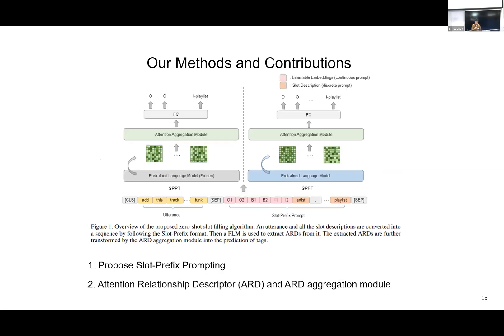The key contributions of our method are: first, we propose slot prefix prompting; second, we use the attention relationship descriptor and ARD aggregation model. In the input stage, we construct the input with the utterance and slot prefix prompting using a special token to separate the input. The pink values are learnable prompts, and the orange values are slot descriptions or slot names.